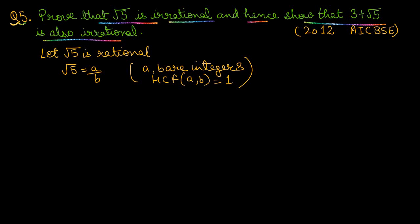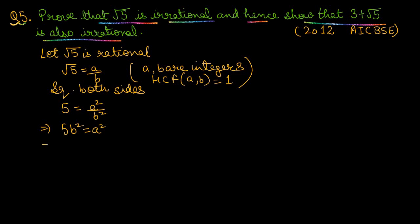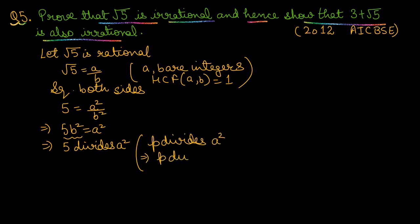Squaring both sides: 5 = a²/b², which implies 5b² = a². This means a² has 5 as a factor, so by the theorem — if a prime p divides a², then p divides a — we get that 5 divides a. So we can write a = 5c for some integer c. This result is noted as (*).